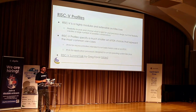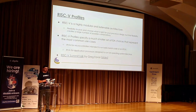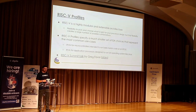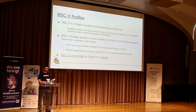RISC-V is highly modular and extensible — great for tailoring a microprocessor design — but it creates a large number of possible combinations. RISC-V Profiles tries to address this by defining smaller subsets for common use cases. Currently they're defining RVM for microcontrollers and RVA for application processors running a full OS like Linux. This hasn't been ratified yet, but hopefully the initial profiles will be ratified sometime this year.